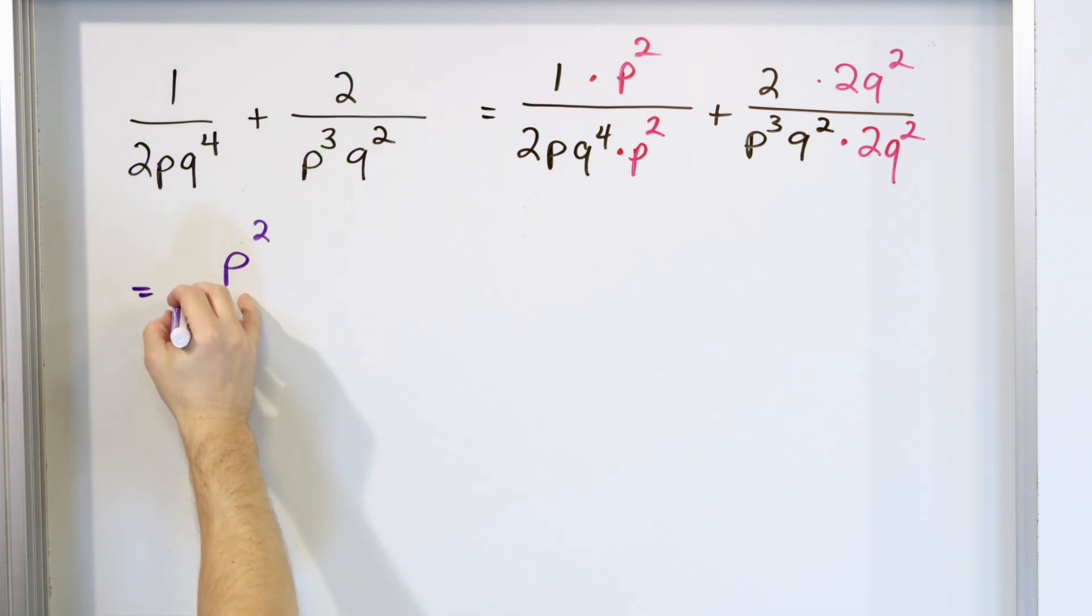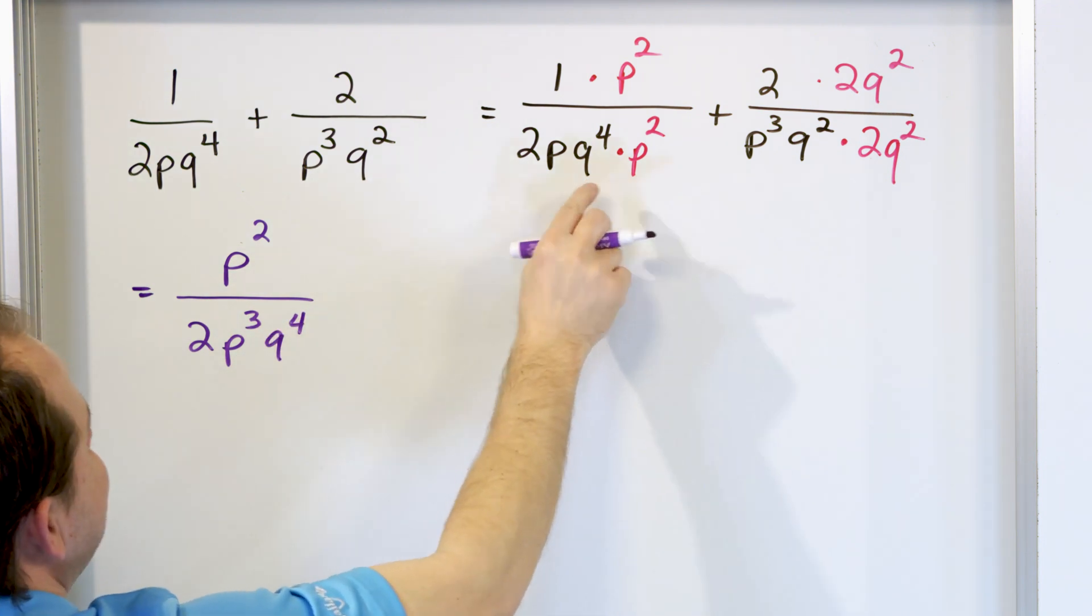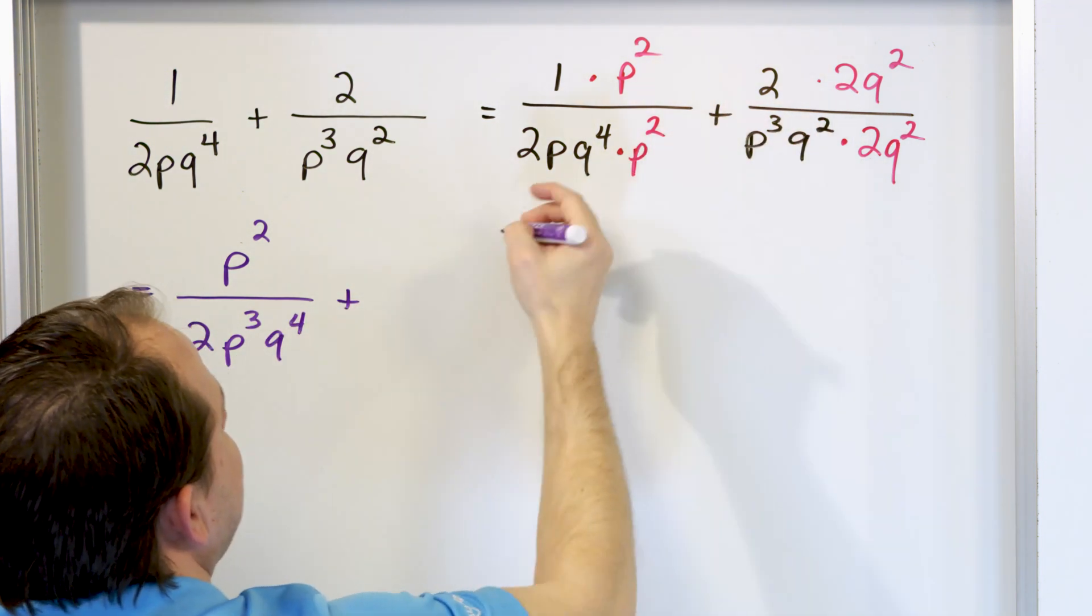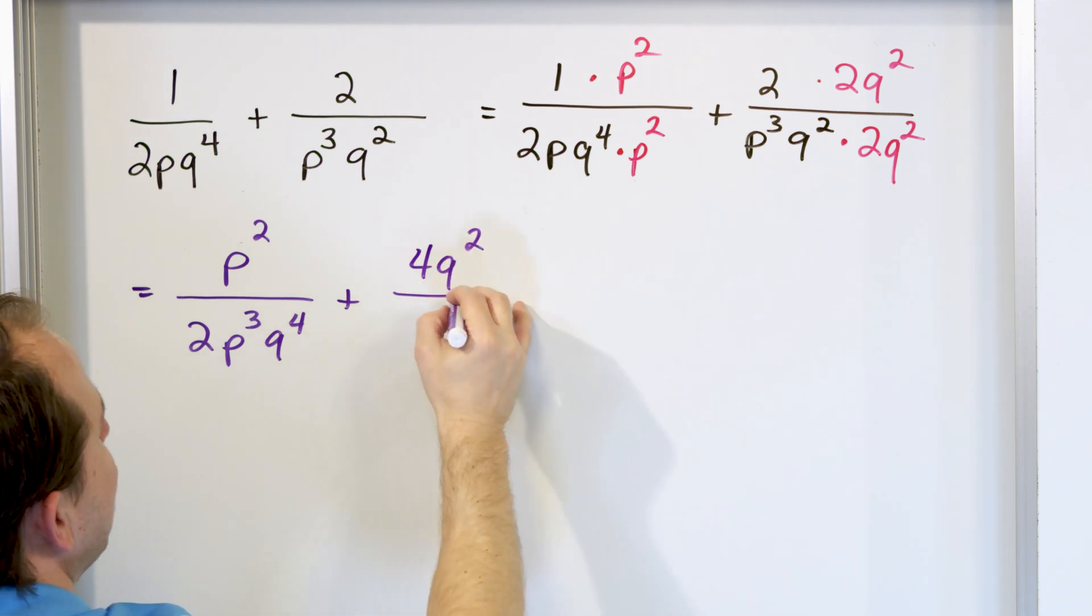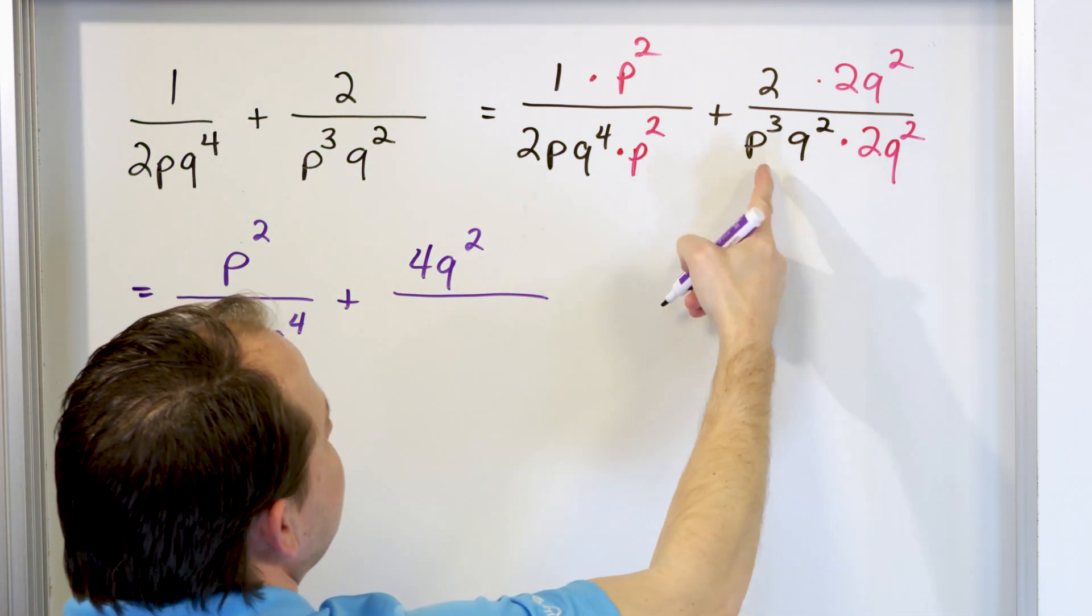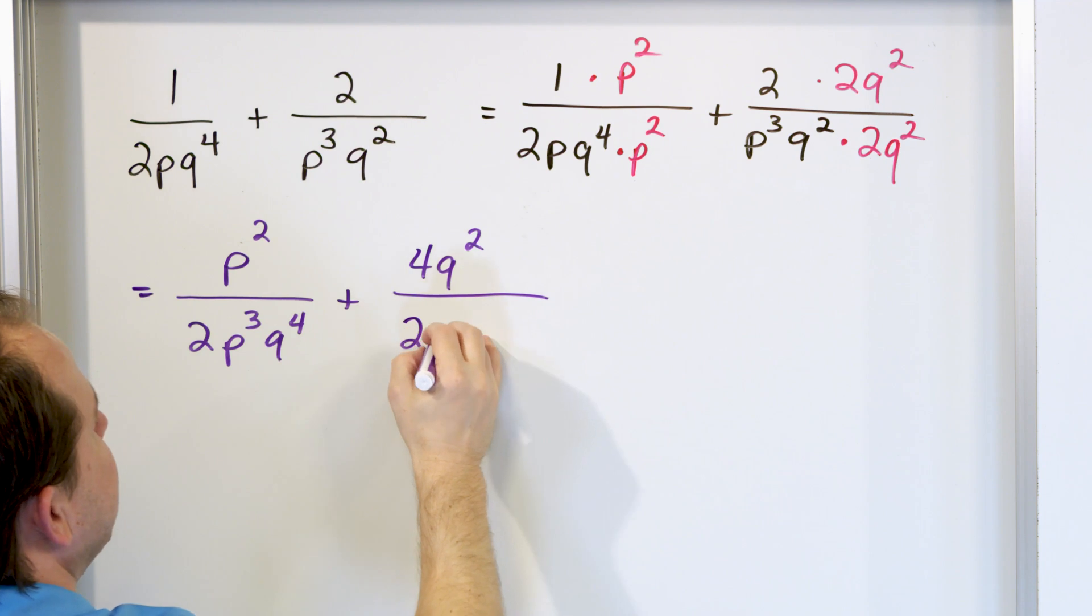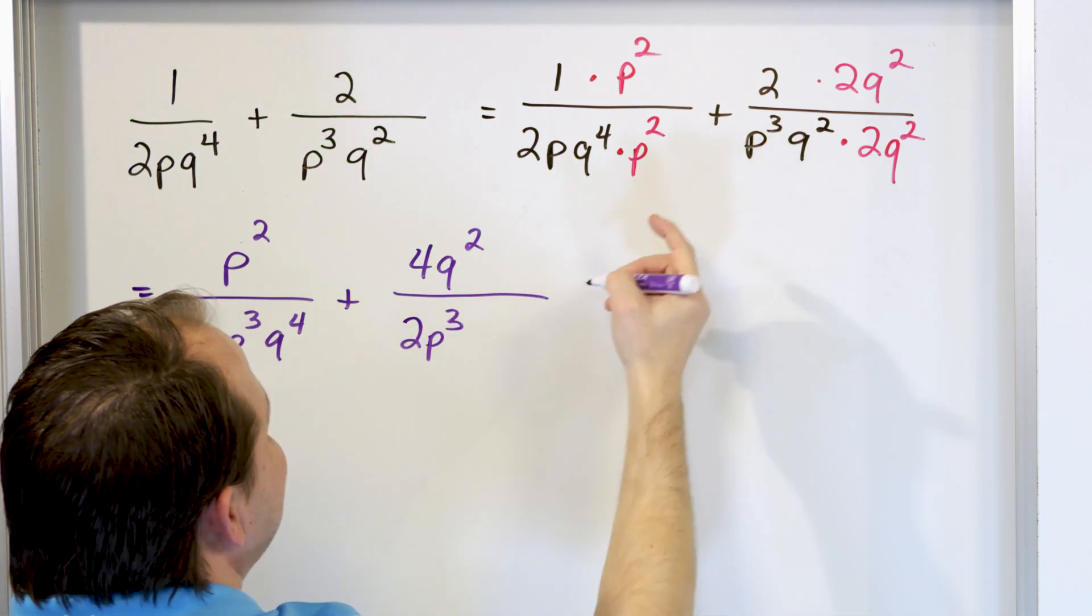And on the bottom, what am I going to have? Two times p to the third power q to the fourth power, because I can add these exponents, plus multiply this, I'm going to have 4q squared over—here I have two p cubed. The q's will add the exponents.